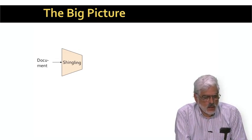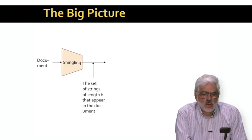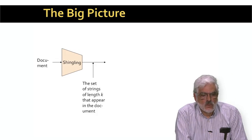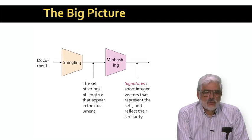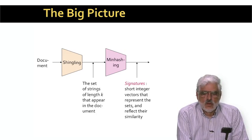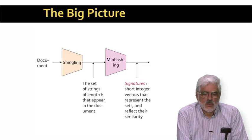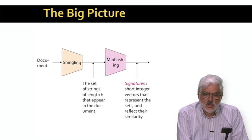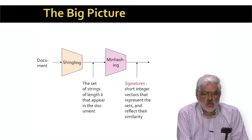So, we start by shingling the document. That is, we replace the document by the set of strings of some chosen length K that appear in the document — that's how we convert documents to sets. We then construct signatures for the sets of shingles using the technique called minhashing. The result of minhashing a set is a short vector of integers. The key property, which we'll prove, is that the number of components in which two of these vectors agree is the expected value of the similarity of the underlying sets. The reason we want to replace sets by their signatures is that the signatures take up much less space. If we're dealing with a large set of documents, we'd like to be able to work in main memory rather than with disk for efficiency, and reducing the space of the representations makes it more likely that we can work in main memory.